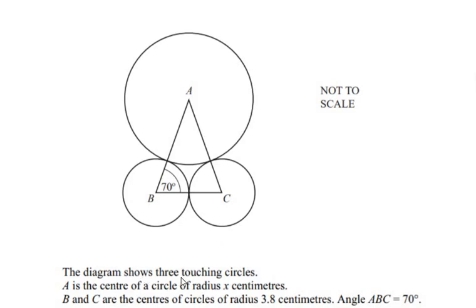The diagram shows three touching circles. We can see that there are three circles with center A, B, and C which touch each other at three points. A is the center of the circle with radius x centimeters.